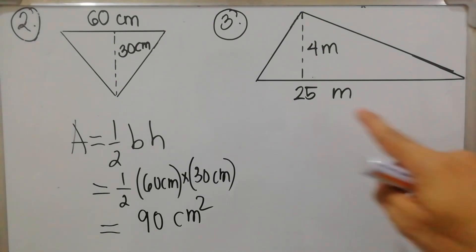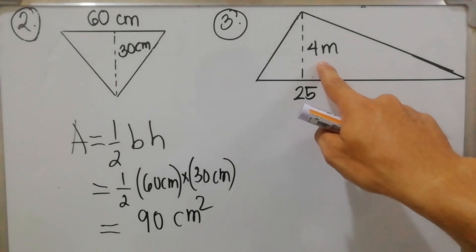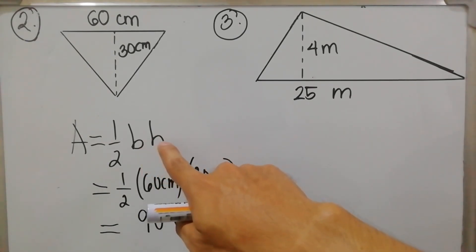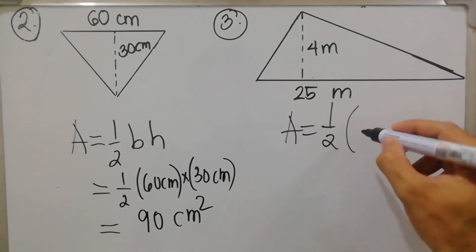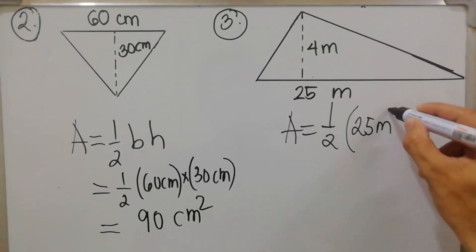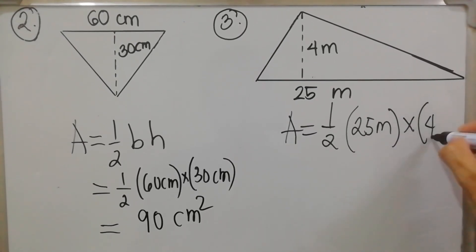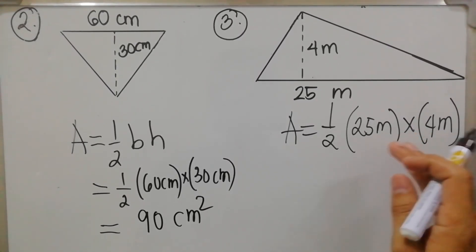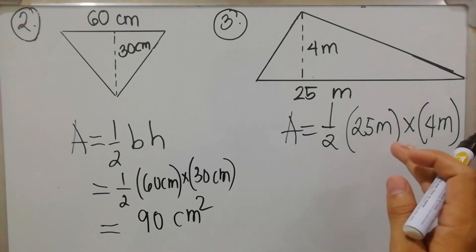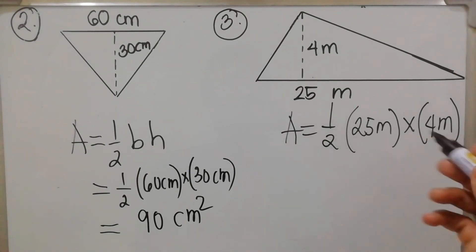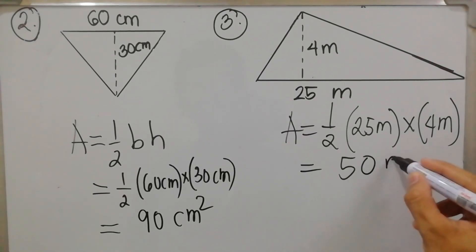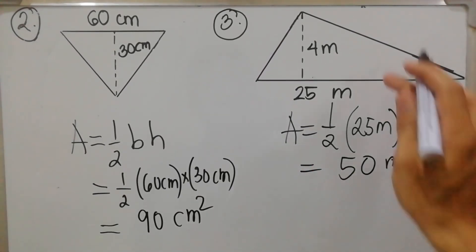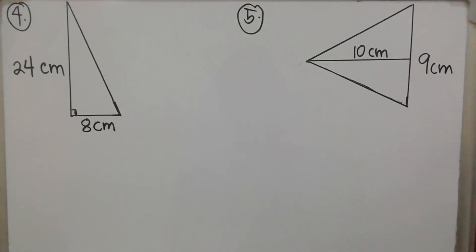For item number three, we have a base of 25 meters and a height of 4 meters. The formula for the area of the triangle is one half base times height: area = one half × 25 m × 4 m. We can divide first: 4 ÷ 2 = 2, then 2 × 25 = 50 square meters. So the area for this triangle is 50 square meters.